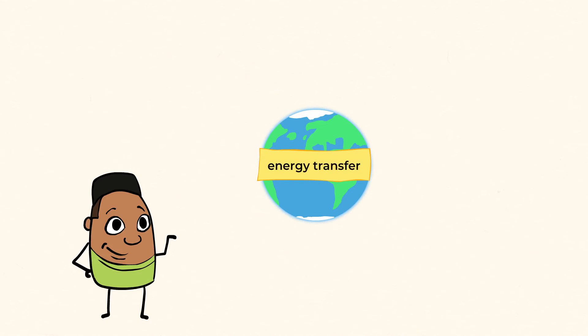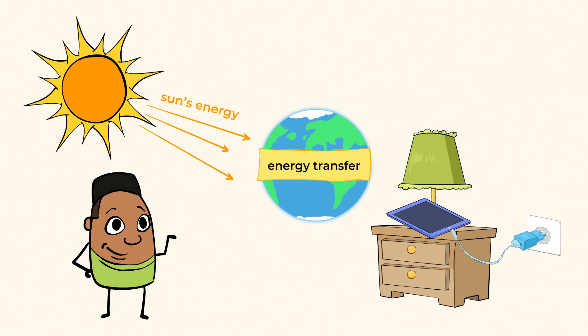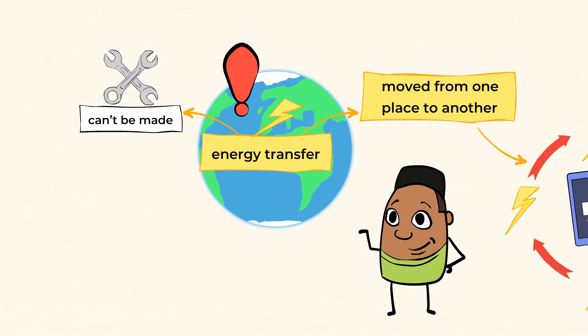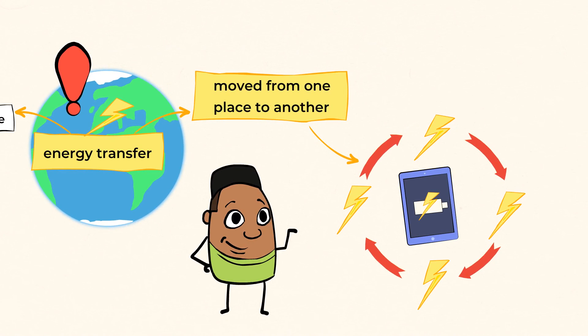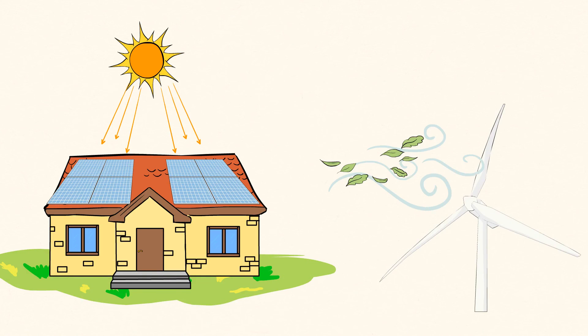It's incredible to think of all the ways that energy is constantly being transferred. From the sun shining down on the earth, to plugging in your tablet or computer into the outlet of a wall to charge. Because we cannot make more energy, it's constantly being transferred from one thing to another. And humans have even found ways to use things like the sun and the wind to transfer their energy into electricity.